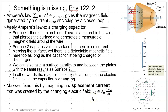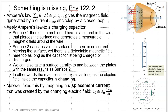Ampere's law gives a magnetic field generated by a current encircled by a closed loop. If you apply Ampere's law to a charging capacitor, we're going to break this up into surfaces. Here's our parallel plate capacitor — we assume it's ideal and vacuum-filled. The wire carries a current as the capacitor is being charged. There's an electric field between the plates that builds up as the capacitor charges. We take surface one with a closed path around the wire carrying current. There's no problem — there's a current in the wire that pierces the surface, and it will generate a measurable magnetic field around the wire.